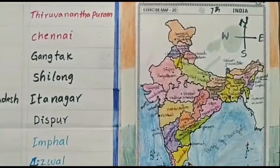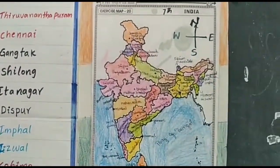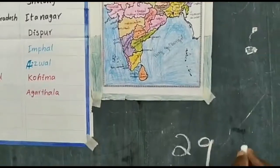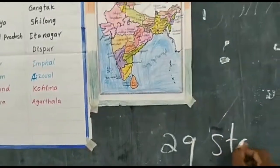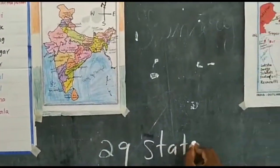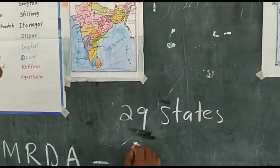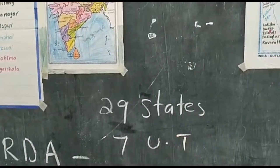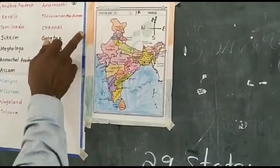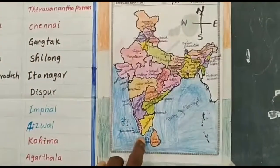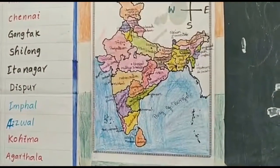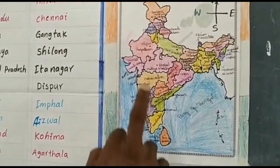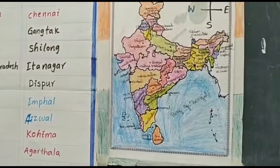Look at this picture — this is the India map. In this India map, there are totally 29 states and 7 union territories. This map explains the 29 states and their capitals.